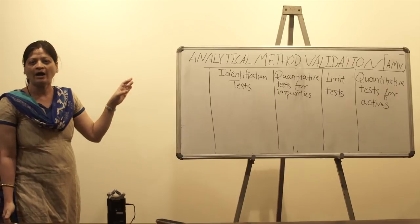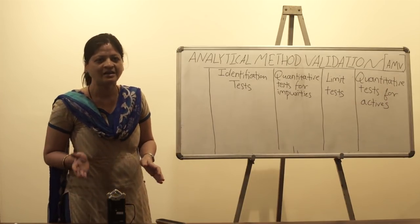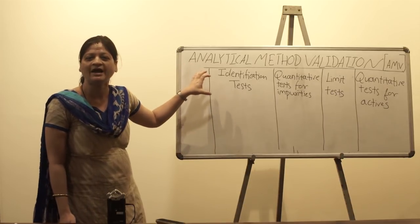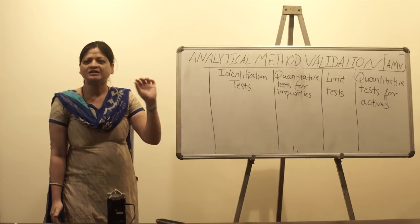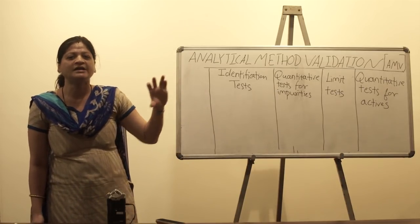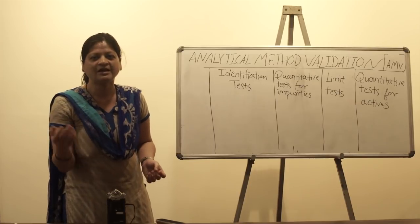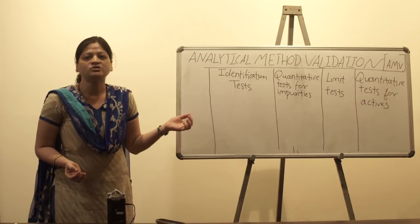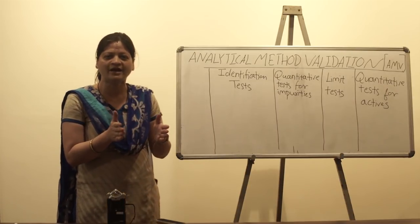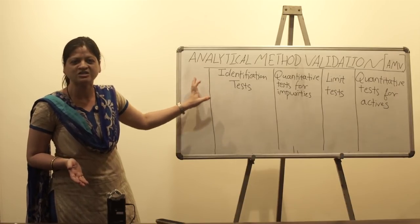As per ICH recommendations, analytical methods are classified into four categories. The first are identification tests — the simplest type of analytical tool, involving qualitative analysis to find the presence of an active in a given sample. For example, detecting sodium ions by flame test or detecting phenol in a compound by adding ferric chloride — these are identification tests where the intent is just to identify whether an analyte is present or not.